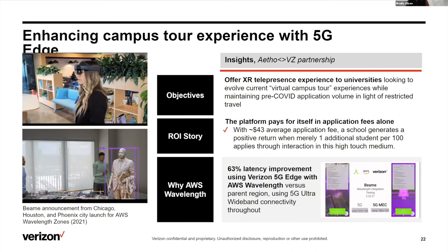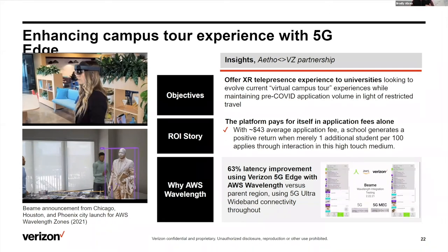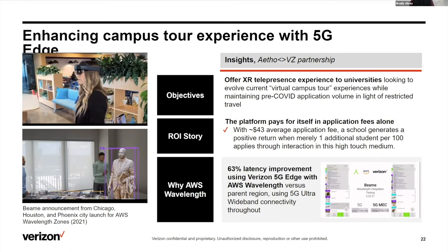We're working with a company called ATHO that's offering an app called BMXR, built for Wavelength. From the comfort of your home, a tour guide from campus would guide you through the campus tour, much like Zoom. Instead of staring at a screen, you use your smartphone, and a statue would suddenly appear — a really high-fidelity 3D model you could interact with, twist around, and ask questions about. You could have all of these rich assets you're directly interacting with without going anywhere. The performance benefits using 5G Edge are pronounced — they saw a 63% latency improvement.